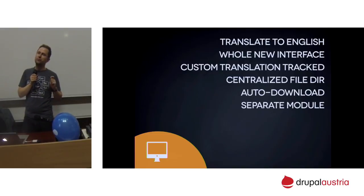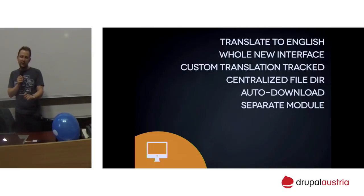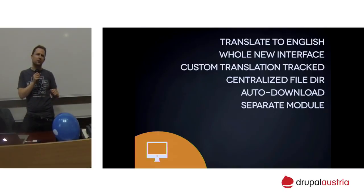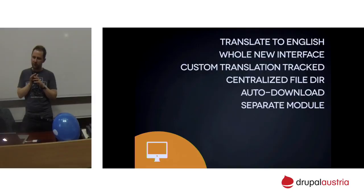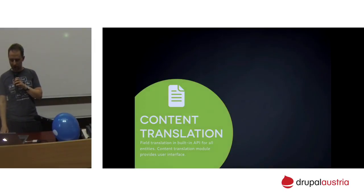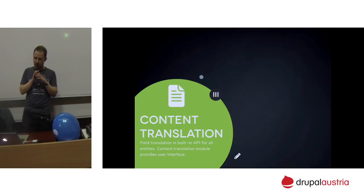One thing that's missing is a user interface for interface translation fallback. The API supports things like German formal and German informal, where you can change only the strings that need changing and fall back on the other translation. There's a small module — I think it's called translation fallback — already in alpha for Drupal 8. We'll probably figure out the UI for that in 8.1 and put it into core.